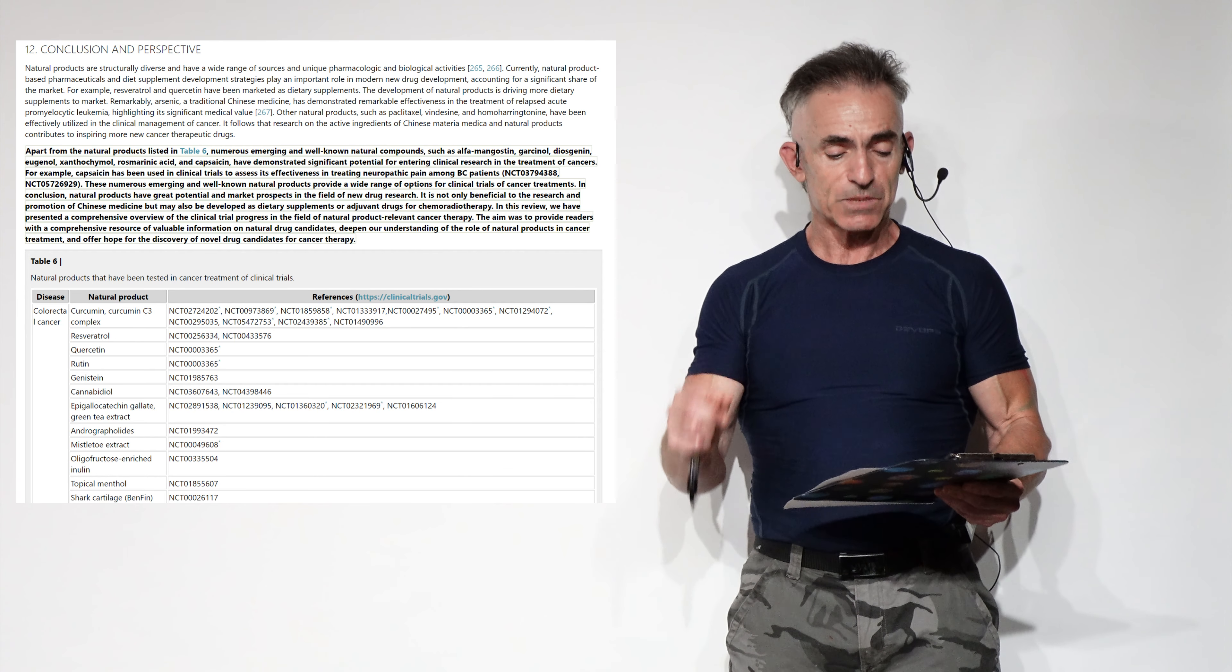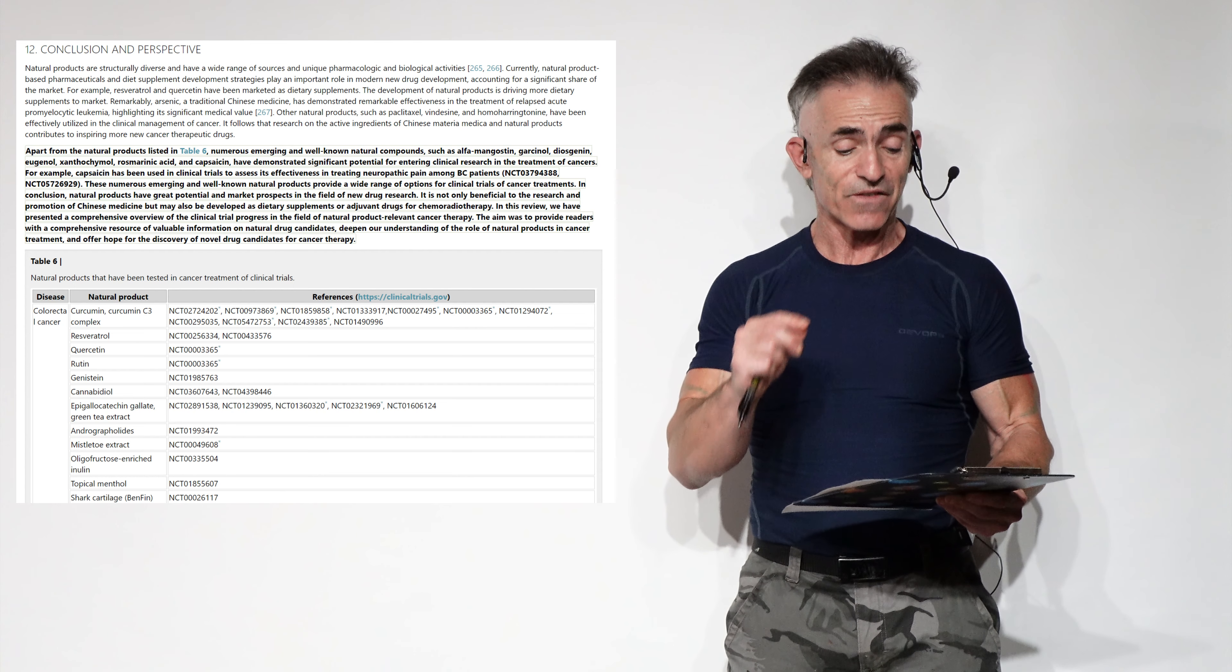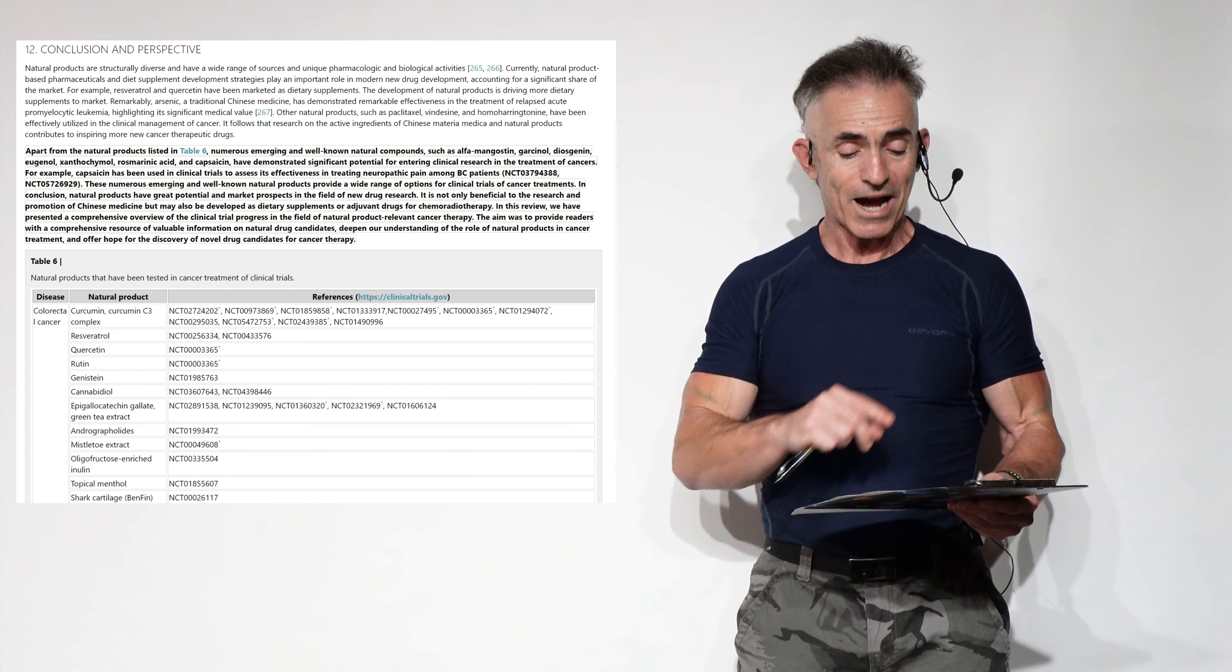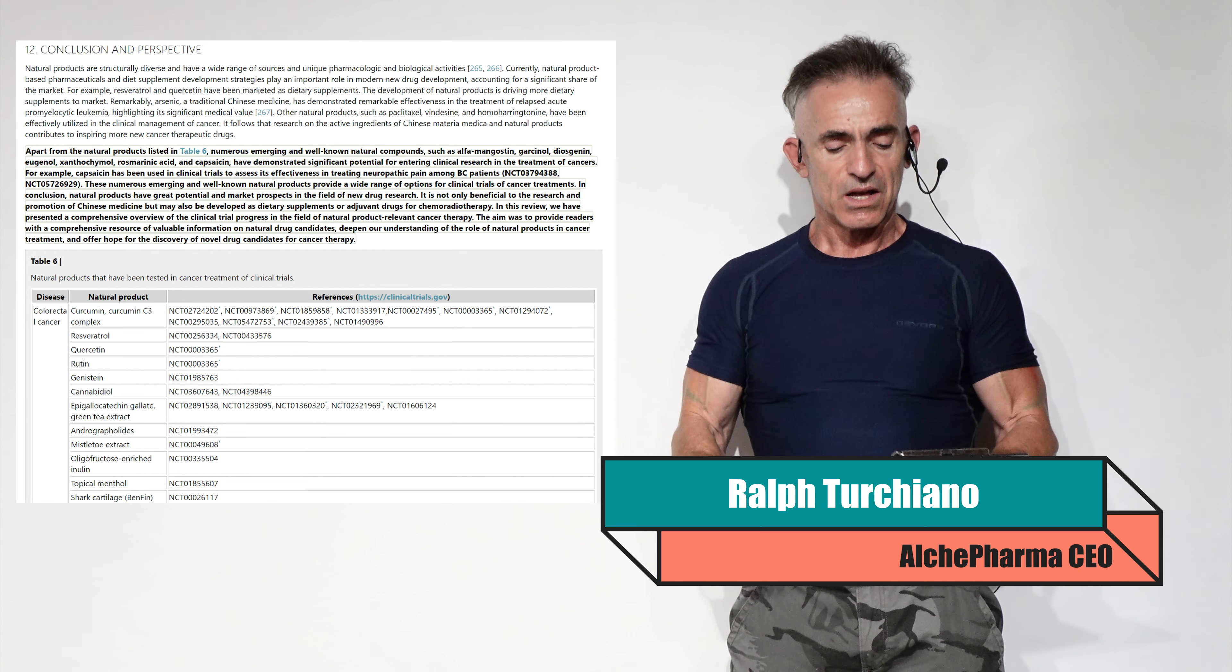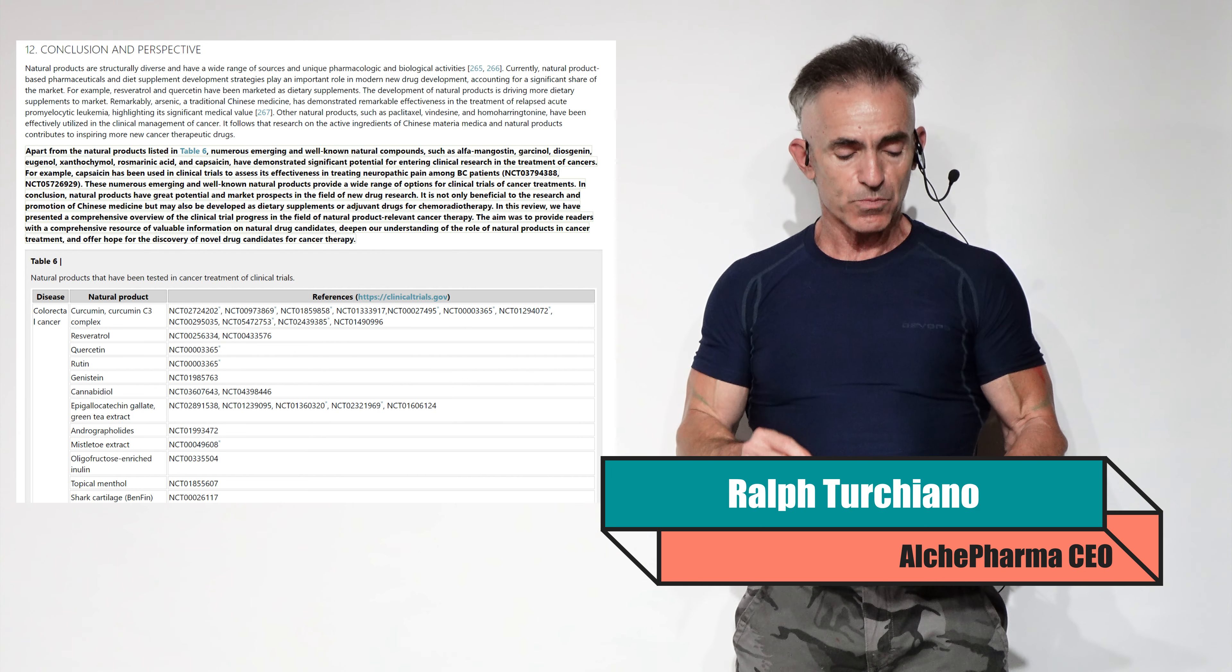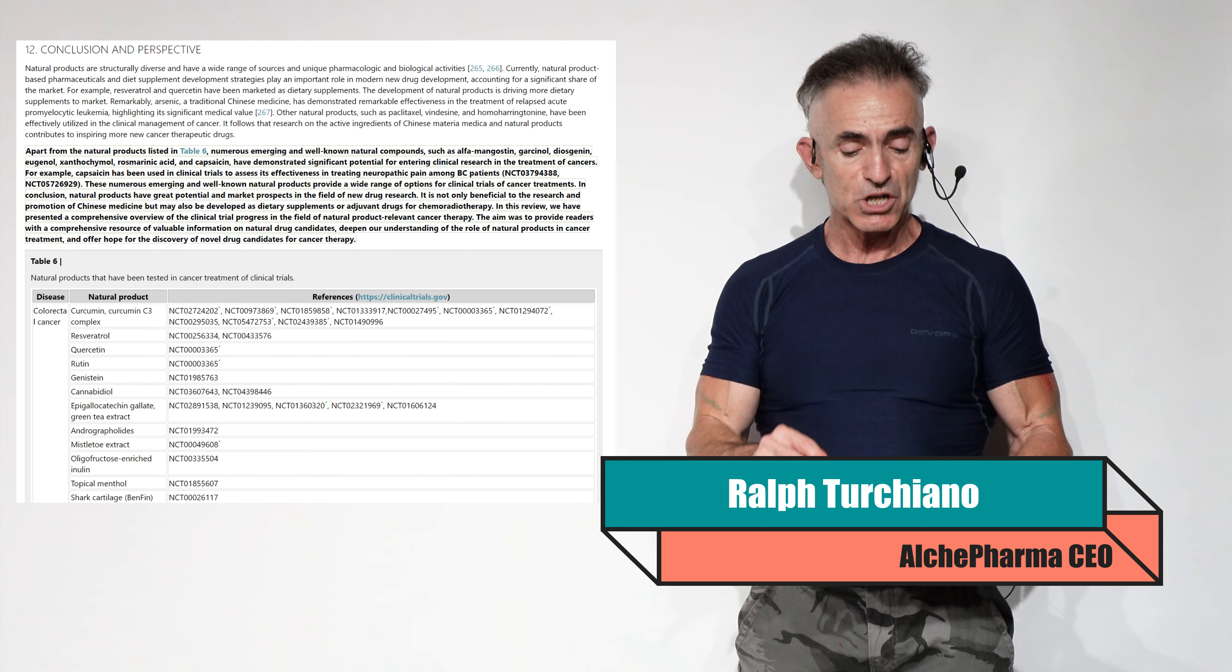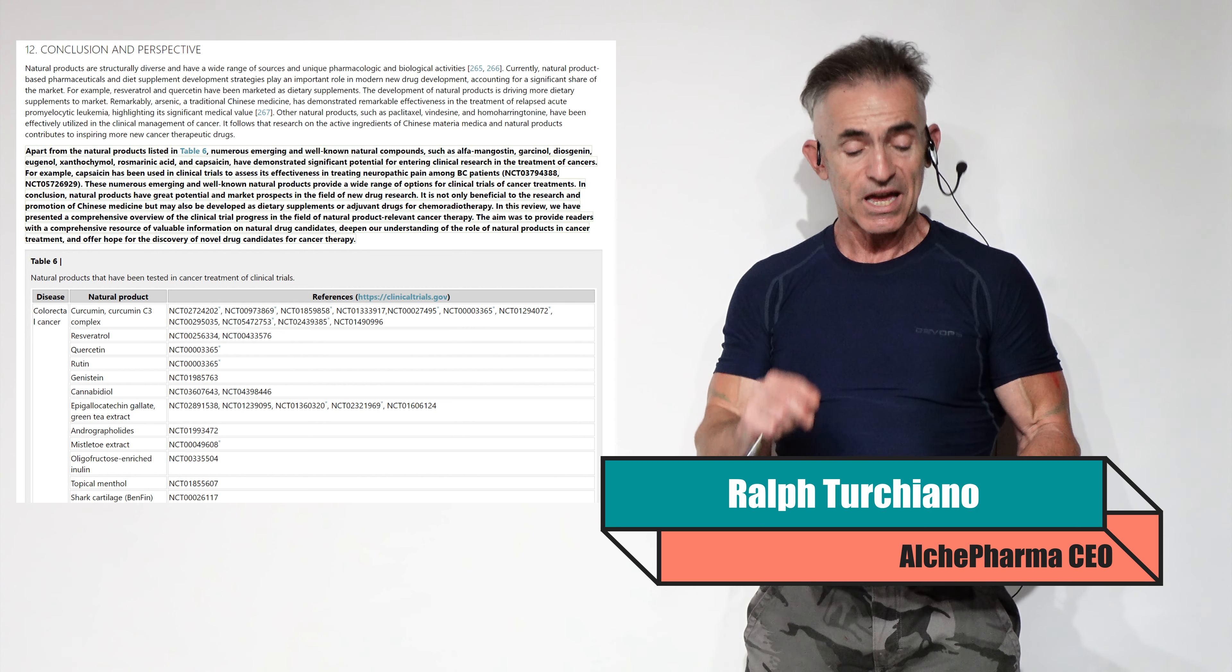For example, capsaicin has been used in clinical trials to assess its effectiveness in treating neuropathic pain among breast cancer patients. And there's your trial numbers. These numerous emerging and well-known natural products provide a wide range of options for clinical trials of cancer treatments.